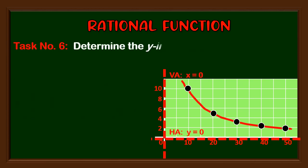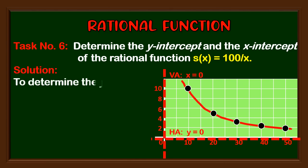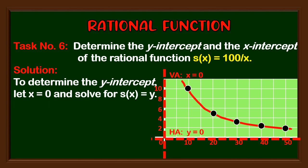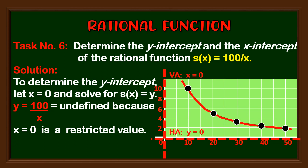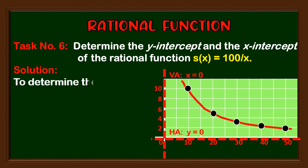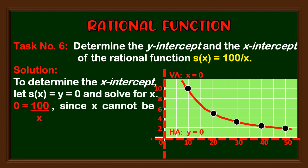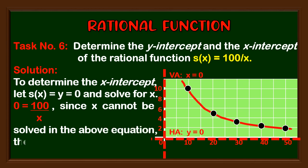Task number six: determine the y-intercept and the x-intercept of the rational function s(x) = 100 / x. To determine the y-intercept, let x = 0 and solve for s(x). However, y = 100 / x is undefined because x = 0 is a restricted value — therefore the y-intercept does not exist. To determine the x-intercept, let s(x) = 0 and solve for x. Since x cannot be solved from 0 = 100 / x, the x-intercept does not exist either.